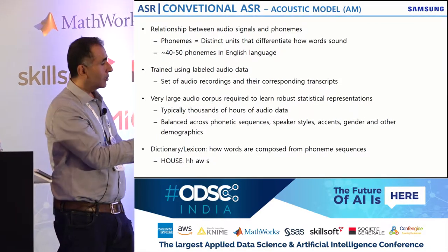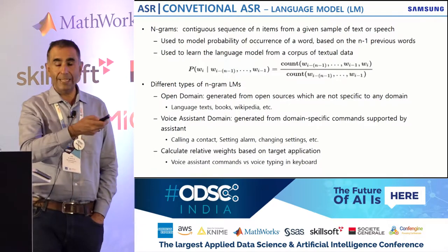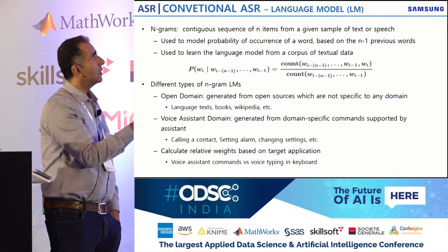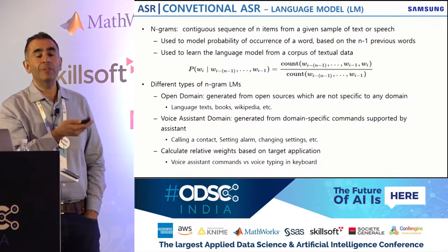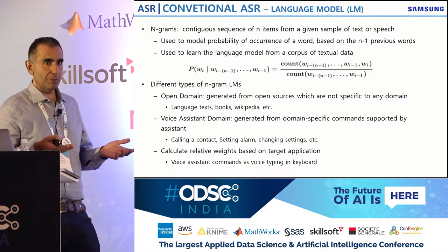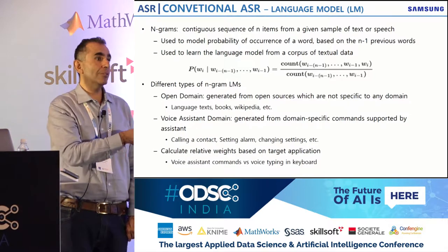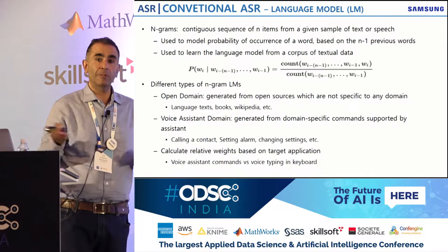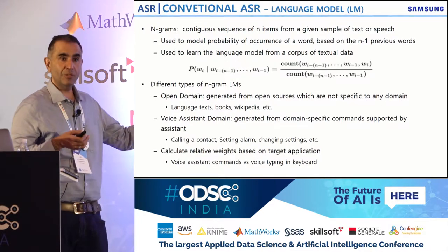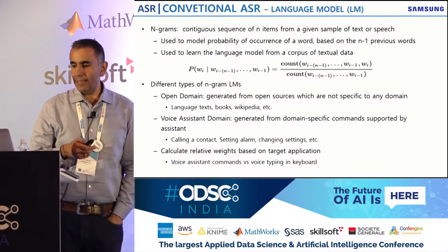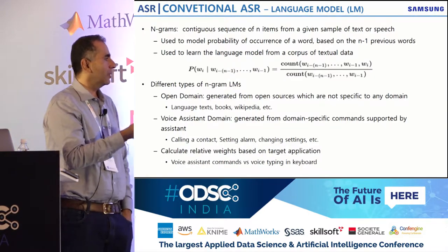A lexicon is a pronunciation model — for example, it says how 'house' is typically pronounced. The language model, typically n-gram but also RNNs these days, predicts the next word based on the n-1 previous words. You can have a generic open-domain language model or domain-specific ones for medical or music domains. The language model has to keep up with changes — new music titles and movie titles come out every month, so it needs the latest information.